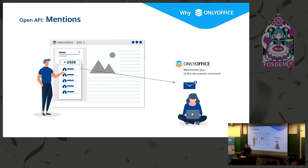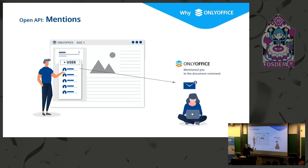You are able to add different features to ONLYOFFICE editors based on your use cases. For example, if you need to mention a user in your document editor, the document editor will connect to your database, request a list of all users, allow you to select a specific user, and then inform your system to notify that user that they were mentioned. That's all you need to do.